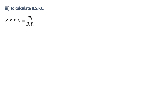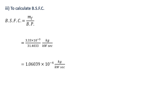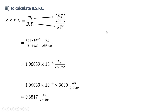Now we calculate brake specific fuel consumption (BSFC), which is the amount of fuel required to develop unit brake power. BSFC = ṁ_F / BP = 3.33 × 10⁻³ / 31.4033, giving units of kg per kilowatt-second. Multiplying by 3600 converts this to kg per kilowatt-hour, since mass of fuel is in kg/s and brake power is in kW.